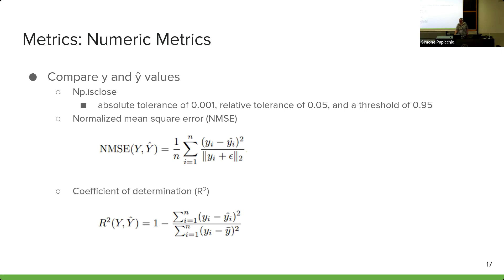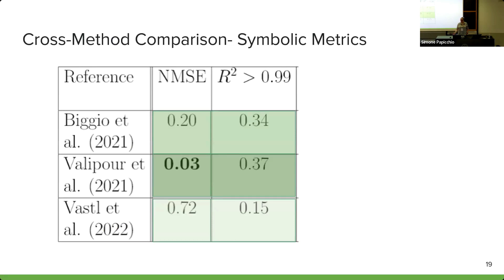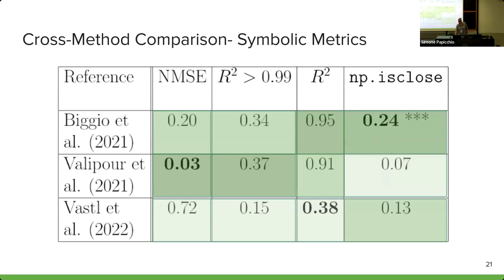We tried to do a cross-method comparison across three different networks and the metrics mentioned. Looking at just normalized mean squared error, Valport's network definitively performed the best. When we look at R-squared over some threshold value, it looks the same. However, expanding to full R-squared, we suddenly see that Biggio's network is performing best. And going further to the NumPy is-close metric, it completely changes again. The ranking of which network is doing best is determined by the actual metric being used, and often the metric that a team uses is the one they created for their own network, so it's no surprise their network performs best on it.